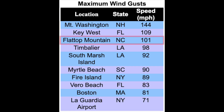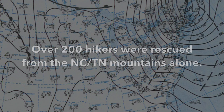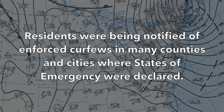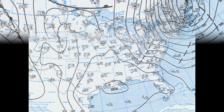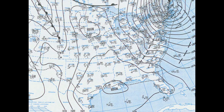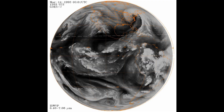Flat Top Mountain, North Carolina recorded a wind gust of 101 miles per hour, with gusts as high as 110 mph at adjacent locations. The record snowfall trapped many people in the Georgia, North Carolina, Tennessee, and Virginia mountains. Over 200 hikers were rescued from the North Carolina and Tennessee mountains alone. Residents were notified of enforced curfews and states of emergency were declared in many counties. Basically all interstate highways from Atlanta northward had been shut down. By Saturday night — zero UTC on March 14th — the low entered its occlusion stage with a central pressure of 966 millibars.